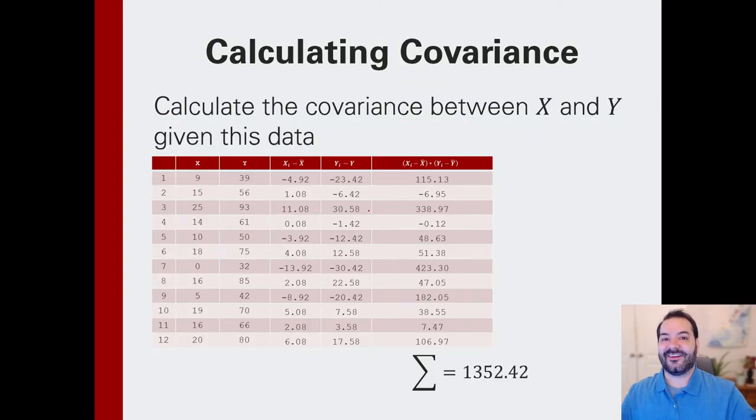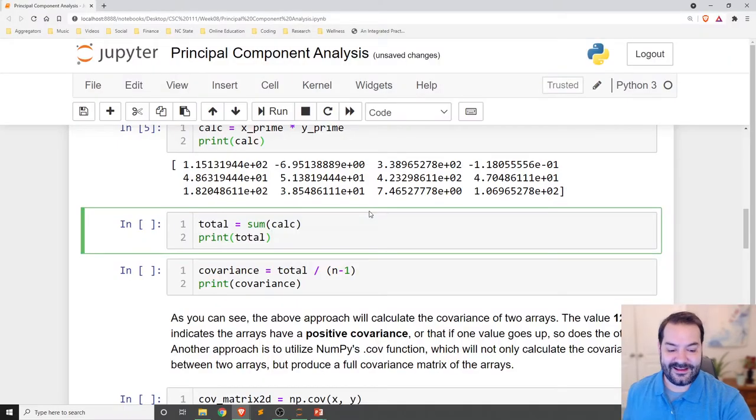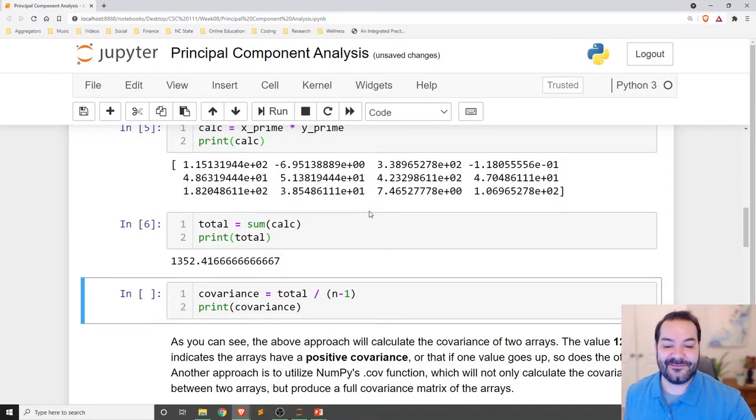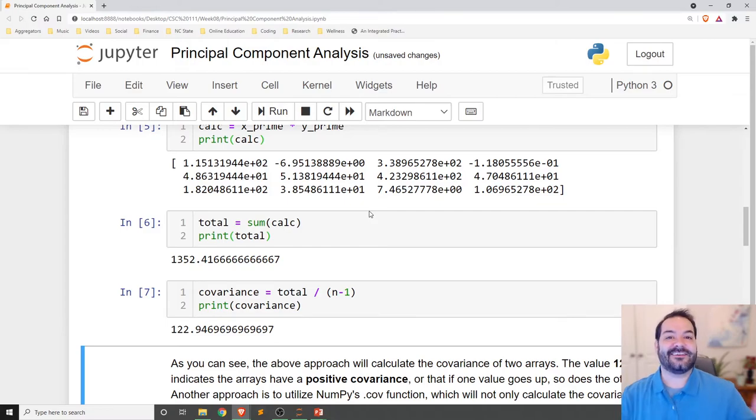And then, we're almost done. We've got to take that. We've got to sum it together, and then we've got to divide it. We've got to take it, we've got to sum it together, and then we've got to divide it. And congratulations, that's how you calculate out a covariance between two arrays.